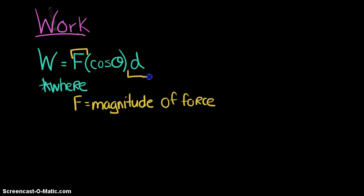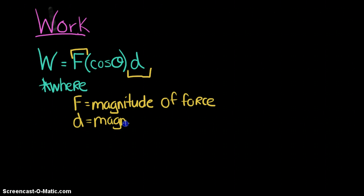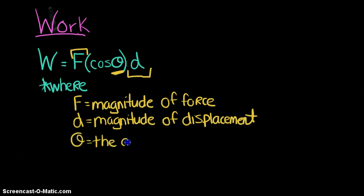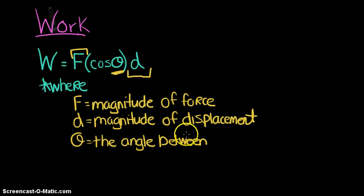Similarly, D is written as D rather than delta-x because it's the distance — the magnitude of displacement. If the displacement were negative 3 meters, we'd put in just 3 meters. Theta is the angle between your force vector and your displacement vector, so it's imperative that you draw both vectors so you can easily identify the angle between them.